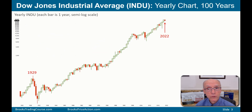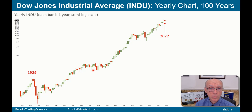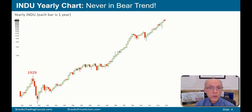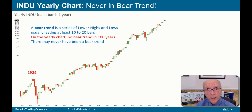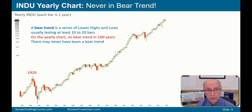This is a hundred years of the Dow Jones Industrial Average — each bar is one year. This red bar is 2022, and the green bar right before it is 2021. On the semi-log scale, the higher prices get compressed and the lower prices get expanded so you can see what took place. The one striking thing about this chart is that it has never been in a bear trend — a series of lower highs and lower lows — at least not on the yearly chart.